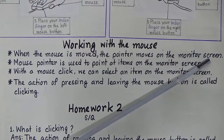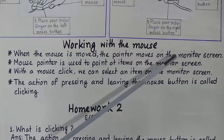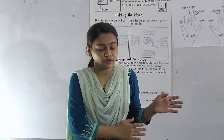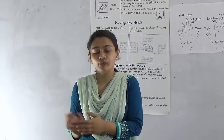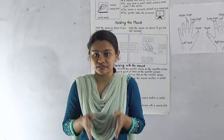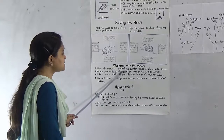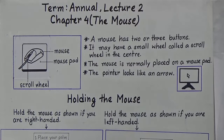The mouse pointer is used to point at items on the monitor screen. We use the mouse pointer to select items on the monitor screen. When you move the mouse to the right, the pointer goes to the right. When you move the mouse to the left, the pointer goes to the left. When you move the mouse up, the pointer goes up, and when you move the mouse down, the pointer goes down. To select an item, take the mouse pointer over that item.